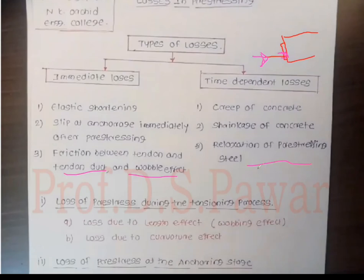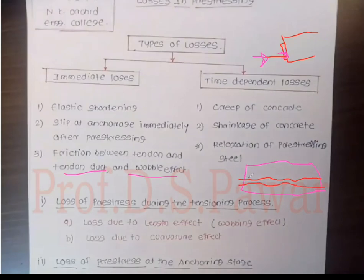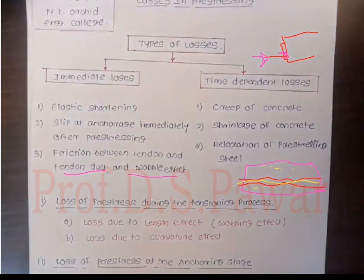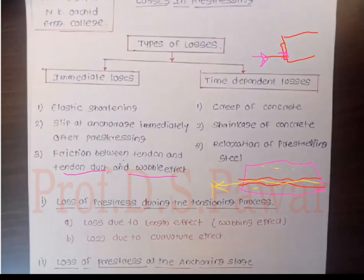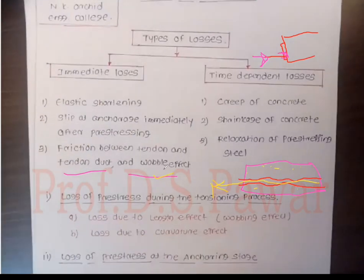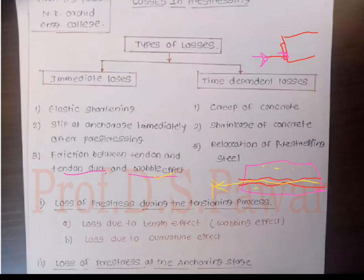Next is friction between the tendon and the tendon duct, and the oval effect. In the post-tensioning process, we have to provide the tendon inside an aluminium duct. After casting the concrete in the beam, we stress this wire to provide tension. In that case there are chances of friction between the tendon and the tendon duct — the tendon and the aluminium duct create friction. There is also the oval effect, which is a curvature effect, and due to that oval effect there are chances of loss of stress in the tendon.